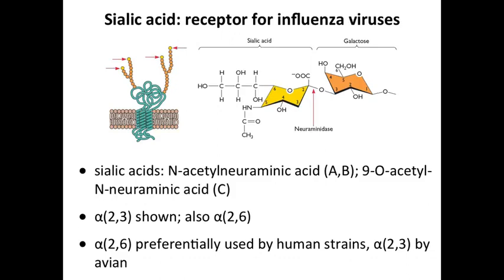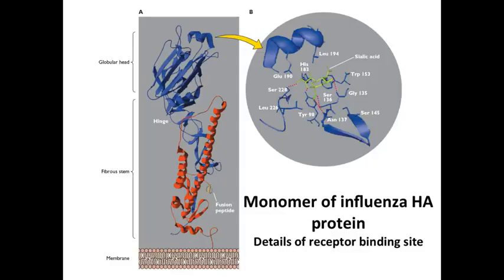We have alpha 2-3 sialic acids in our lower respiratory tract but not much in the upper tract. Avian influenza virus strains prefer alpha 2-3 linked sialic acids, which is one reason it's not easy to be infected with avian influenza: the receptors are deep in the lungs and require inhaling a large aerosol. But it does happen — people occasionally die from influenza H5N1, an avian strain that binds alpha 2-3. We'll discuss that story in more detail later.